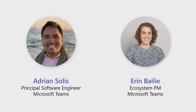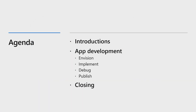We're going to talk about the app development process, and we'll take you through the four phases of app development: envisioning your app, implementing it, debugging it, and then publishing it. Lastly, we'll share some resources and tips for writing and publishing an app in Teams.